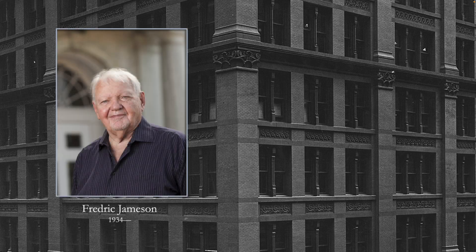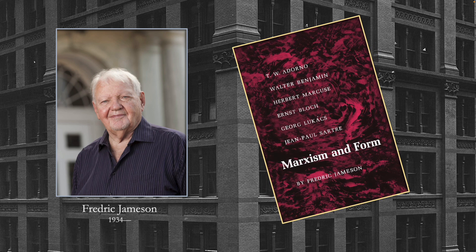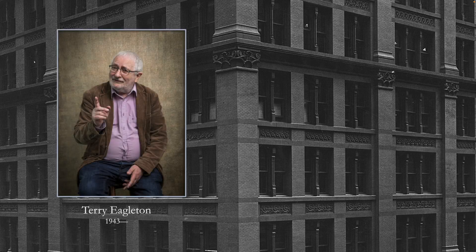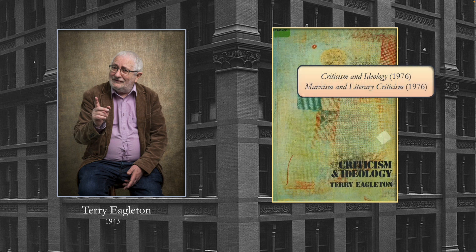Then we have some English-speaking Marxists. Frederick Jameson, still alive, introduced a lot of the European Marxist intellectuals to the English-speaking world in the early 1970s, and then published a work of literary criticism, The Political Unconscious: Narrative as a Socially Symbolic Act, appearing in 1981. Those are his two major contributions to Marxist theory. Another one who pairs with him is Terry Eagleton, also still alive as of this recording. His two early major contributions to Marxist literary criticism appeared in 1976: Criticism and Ideology and Marxism and Literary Criticism.